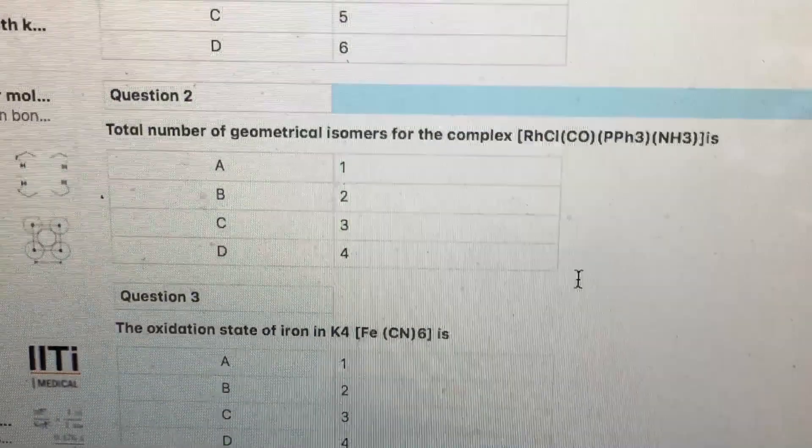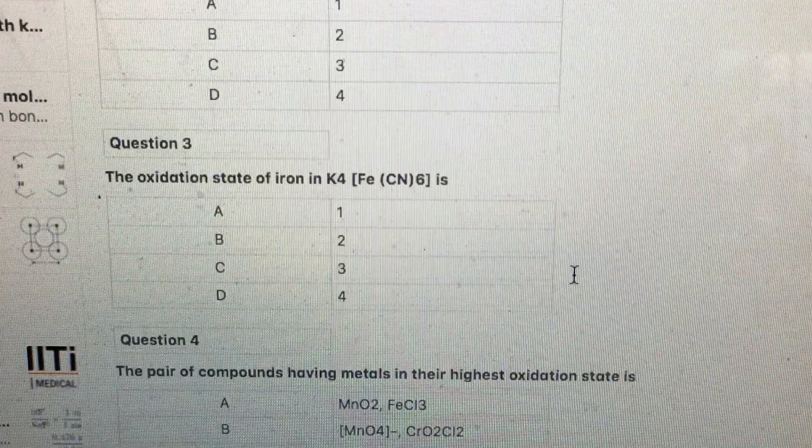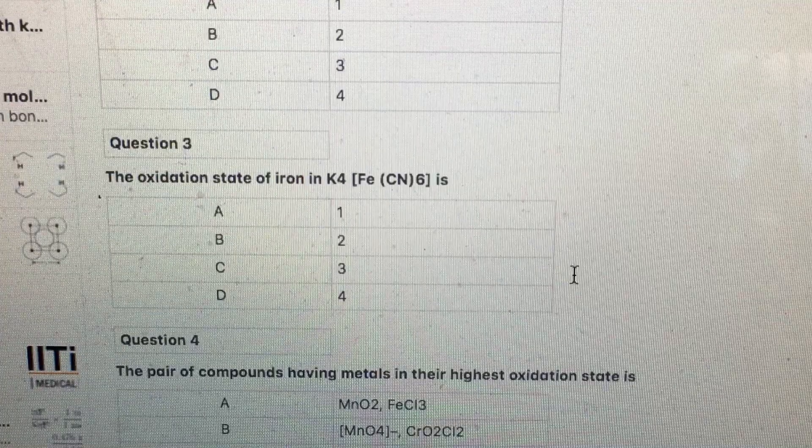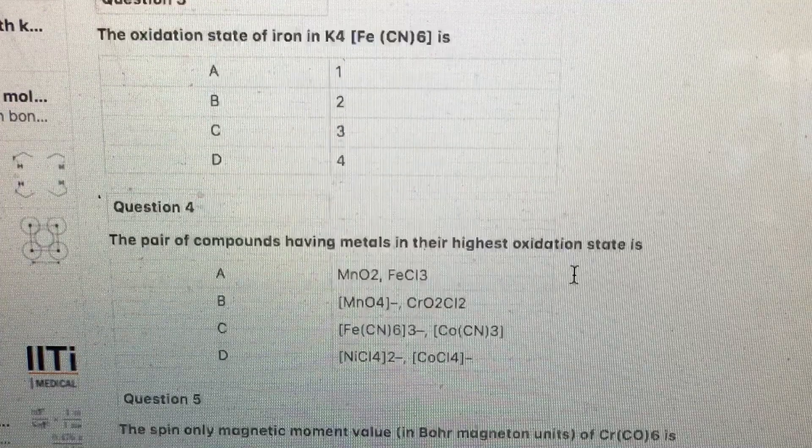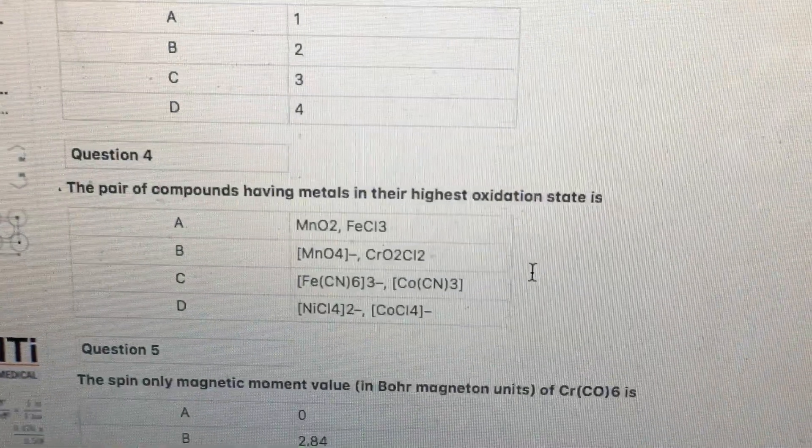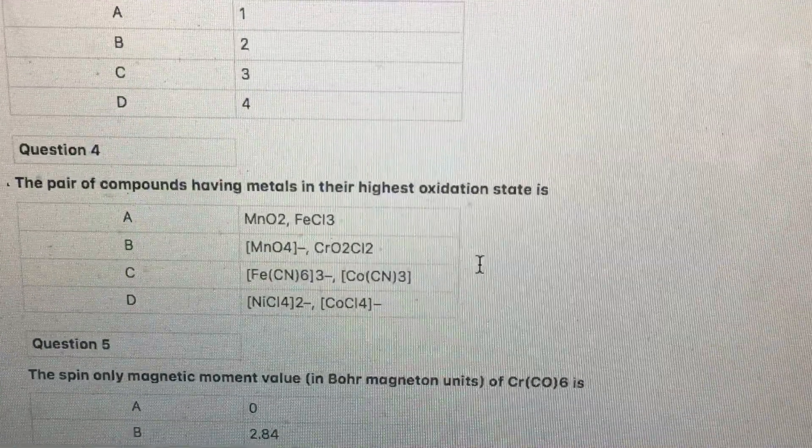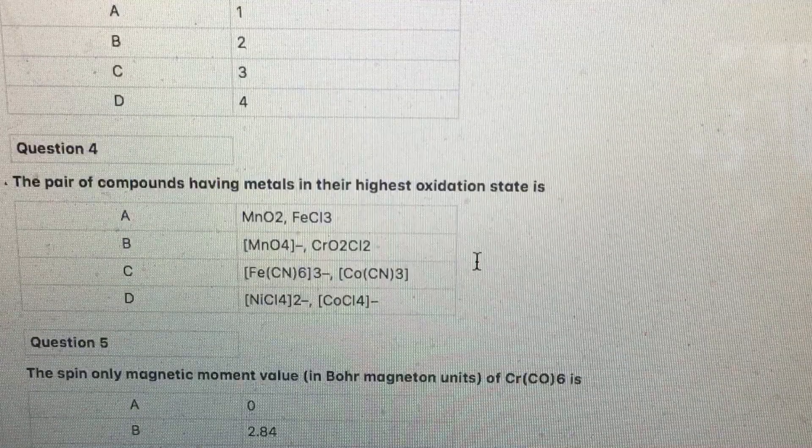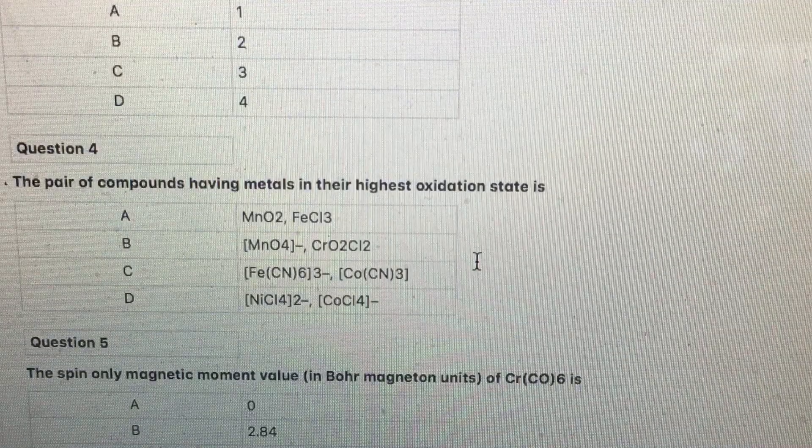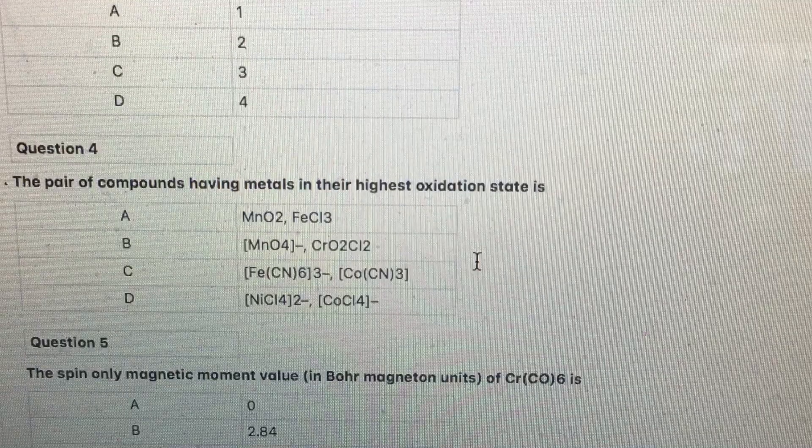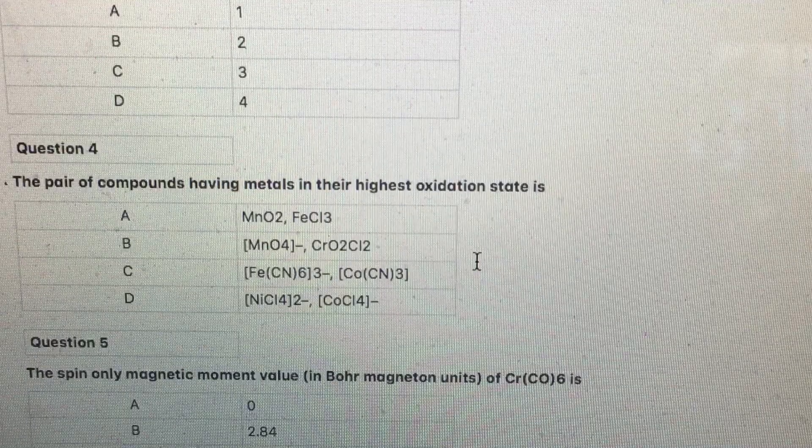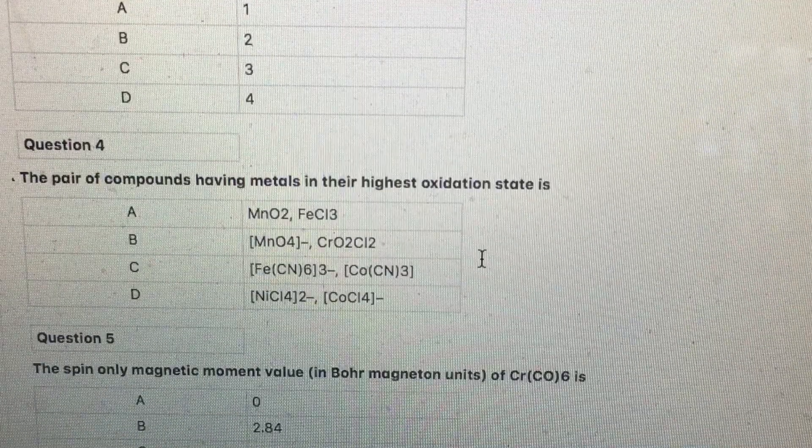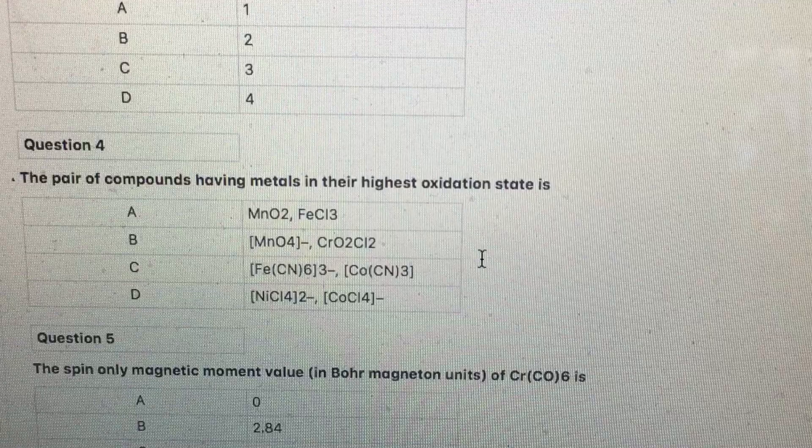The oxidation number of iron in K4[Fe(CN)6] is obviously plus 2 if you work out using usual rules. The pair of compounds having metals in their highest oxidation state: work out the oxidation state of each. You can see that in permanganate ion, manganese is plus 7, that is highest. In CrO2Cl2, chromium chloride, chromium is also highest, plus 6.